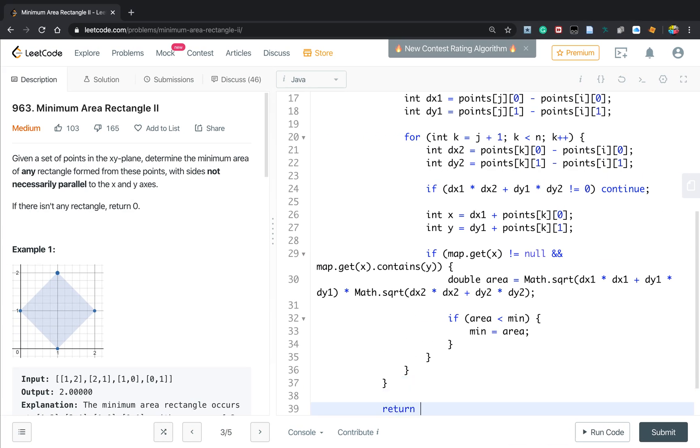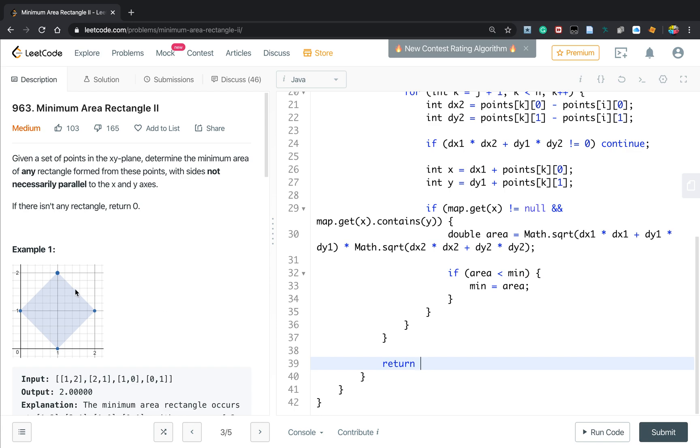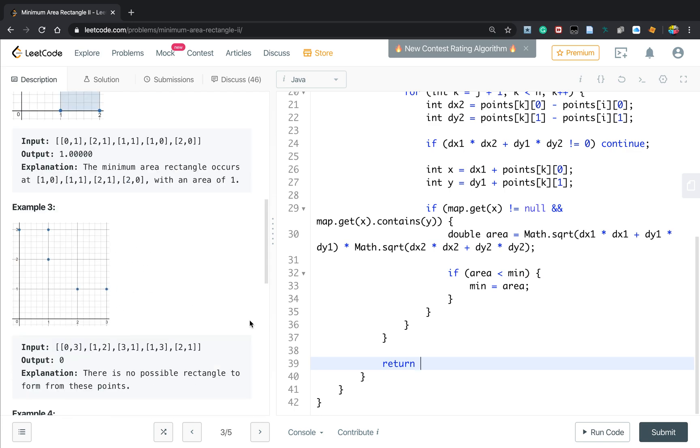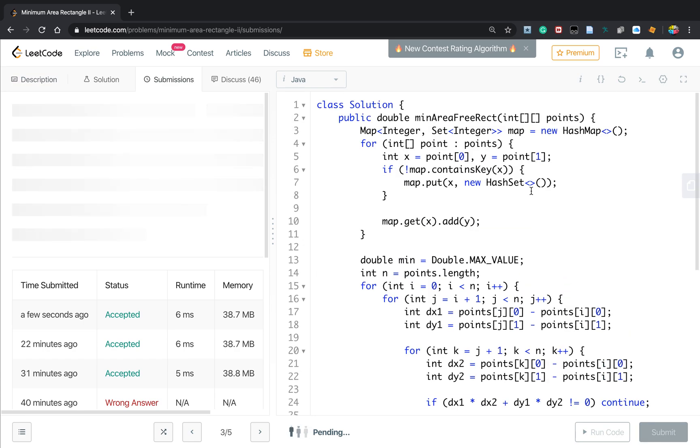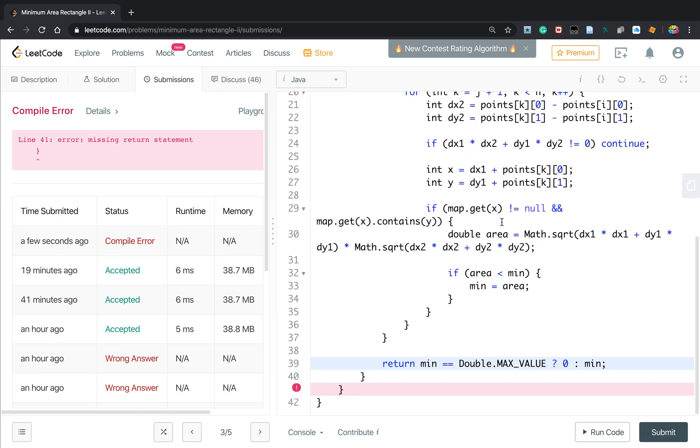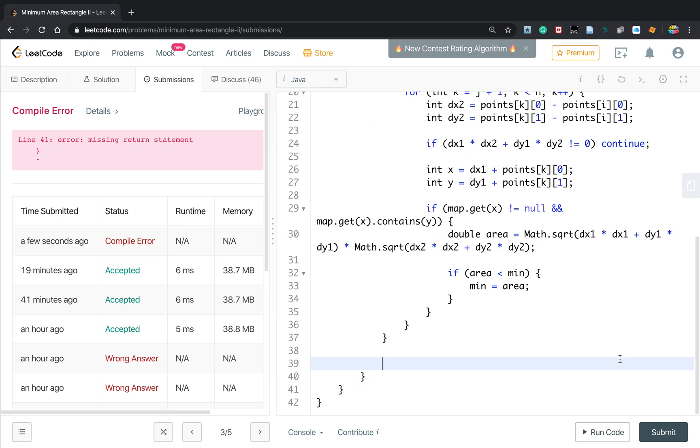So finally, we need to check if, like this example, they cannot form a rectangle. We just return 0. So if minimum equal to double dot max value, we just return 0. Otherwise, we return minimum. So we should finish that.